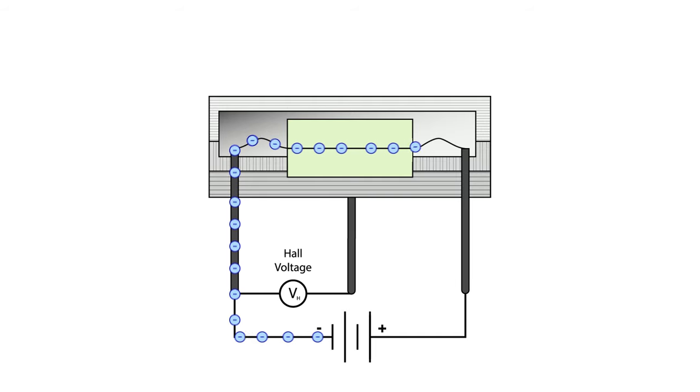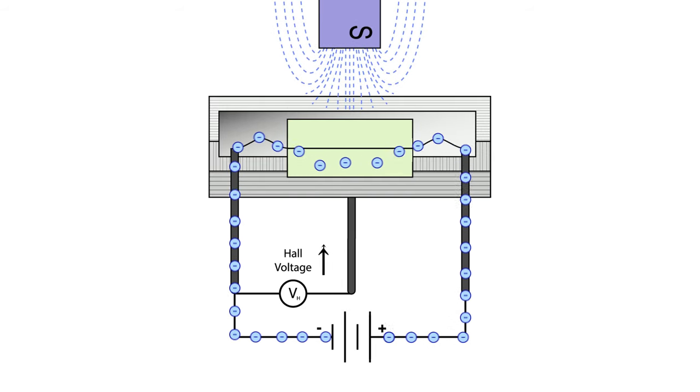In a Hall effect sensor, current flows through the device between its VCC and ground pins. When an external magnetic field is introduced, it interacts with the magnetic field of the flowing current. The path of the current appears to curve, as the electrons flowing through the device are deflected to one side, creating a charge imbalance across the chip.